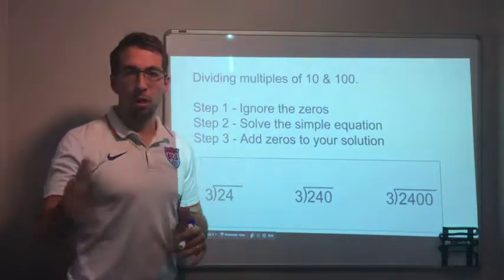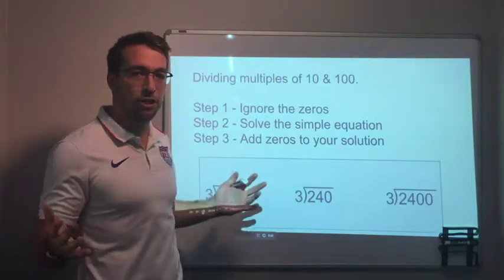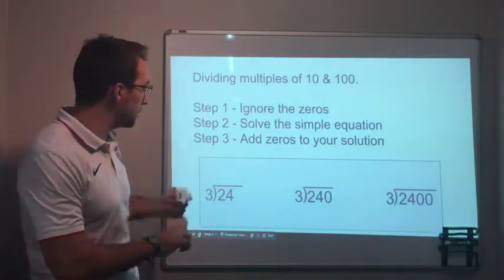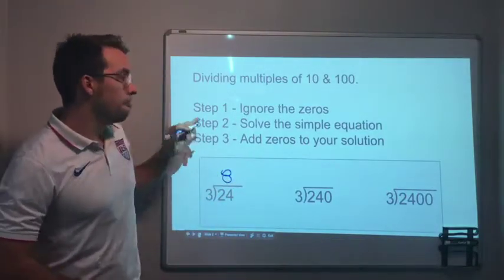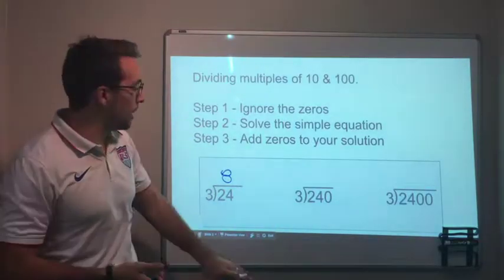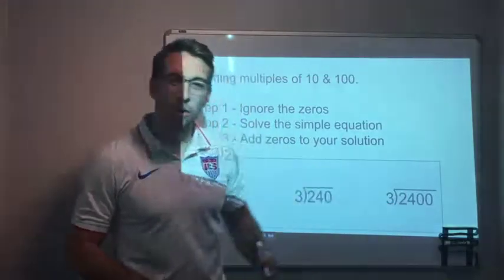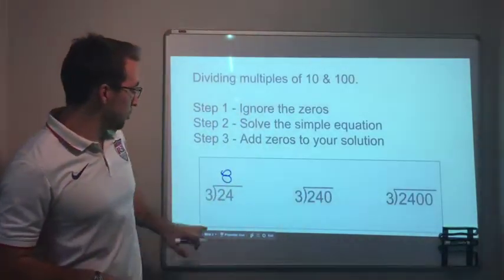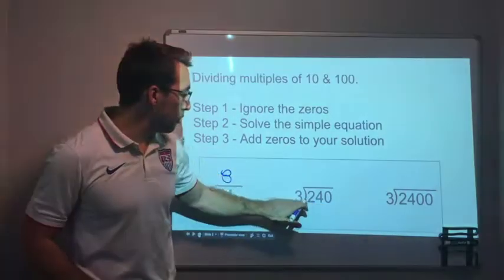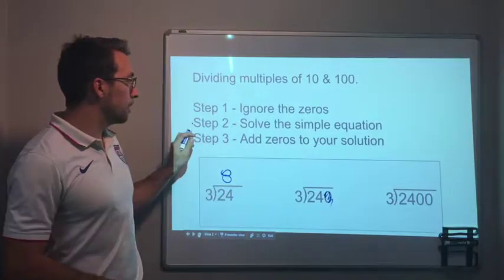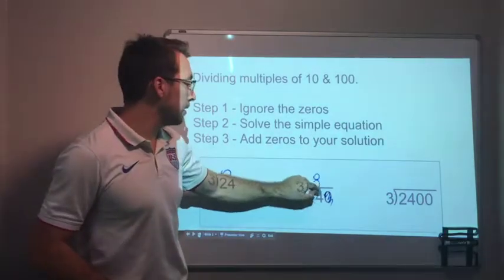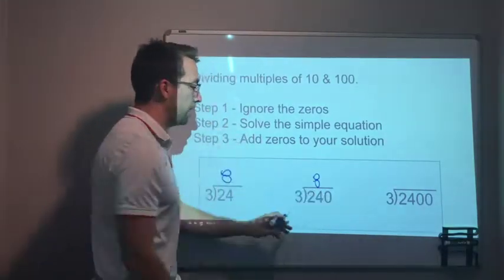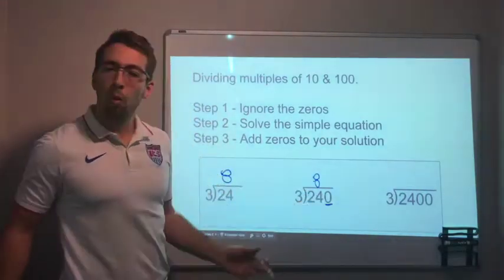So let's go over what we have to do in a basic division problem. 24 divided by 3 is 8 — we know that. The first thing, if we see zeros in the dividend, we can ignore them at first. Step one: ignore the zeros. So 240 divided by 3 — just ignore that zero, solve the equation: 8.